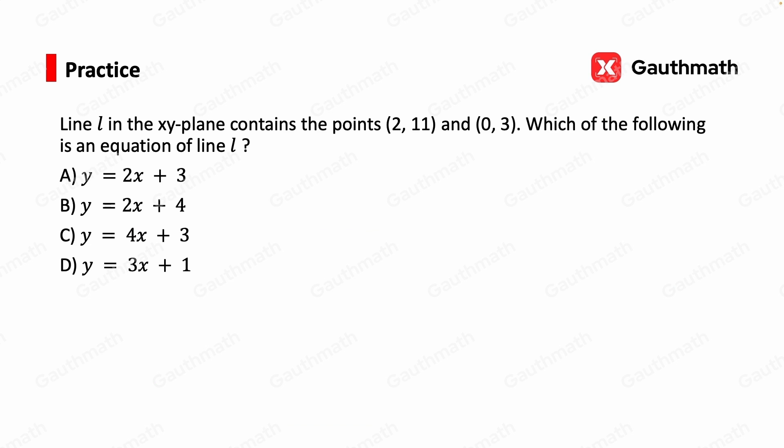Now let's look at a practice question. Line L in the xy-plane contains the point 2, 11 and 0, 3. Which of the following is an equation of line L? Okay, so now when we look at these two points, we realize one of them is the y-intercept. Why is that? Because the x-coordinate of that point 0, 3 is 0, right? So that it must be a point on the y-axis.